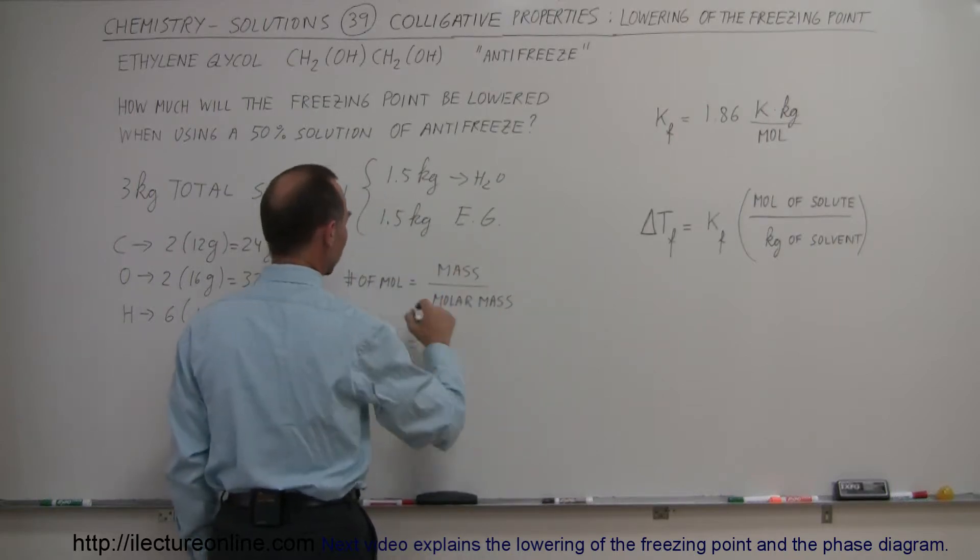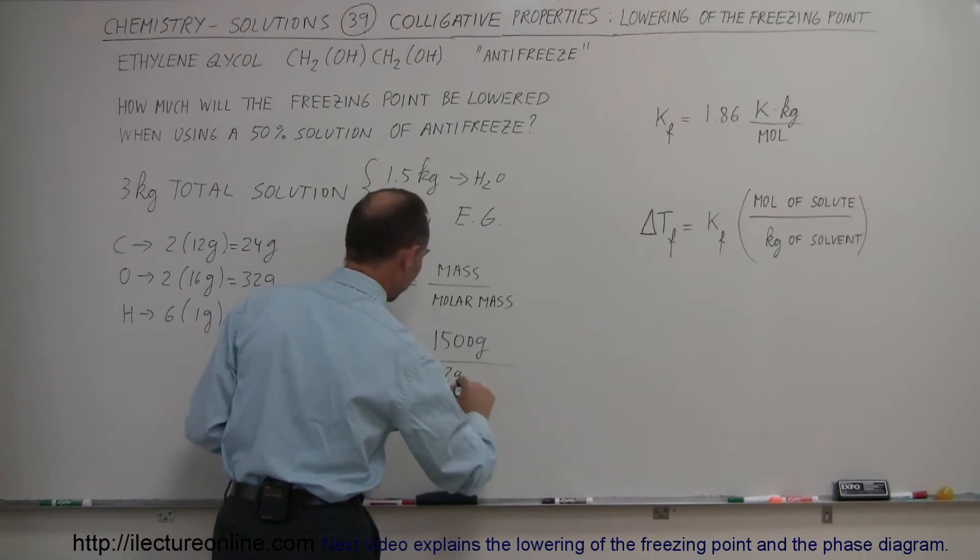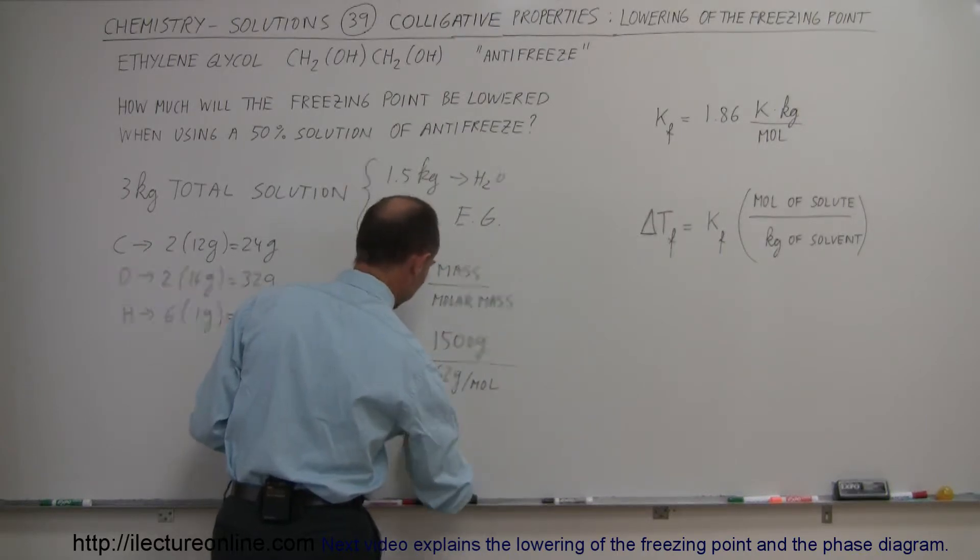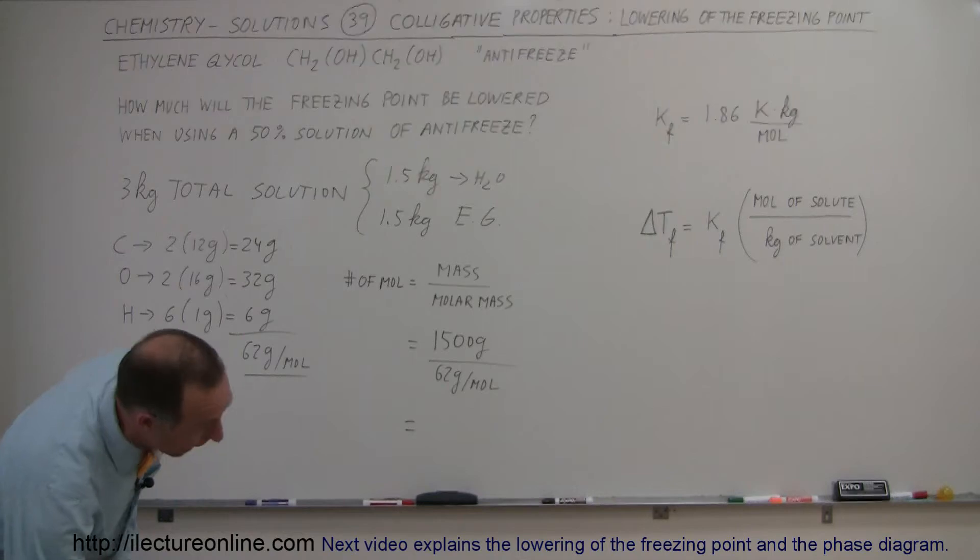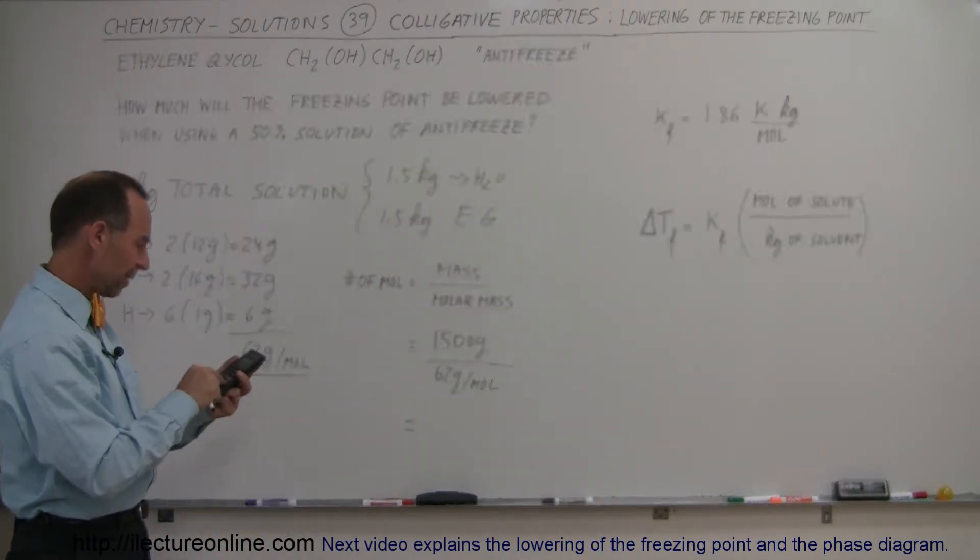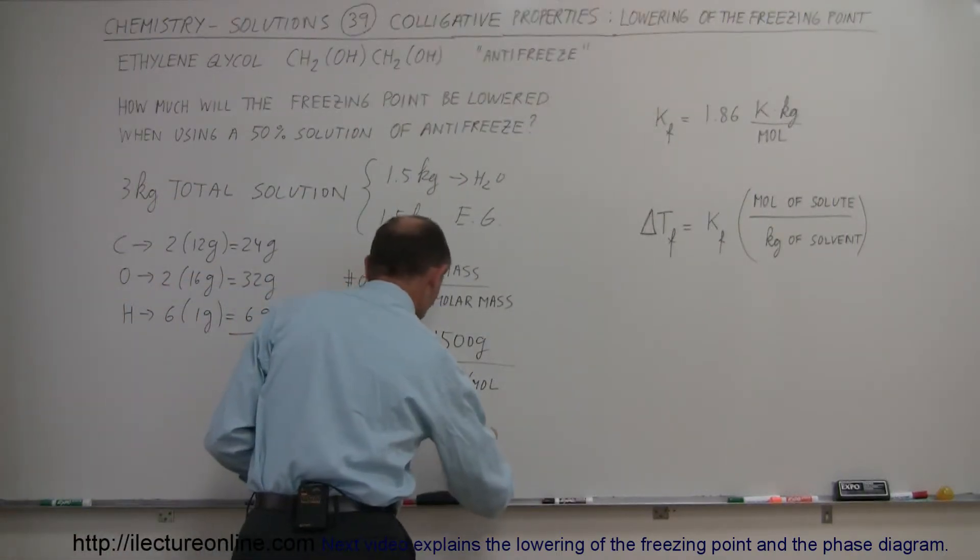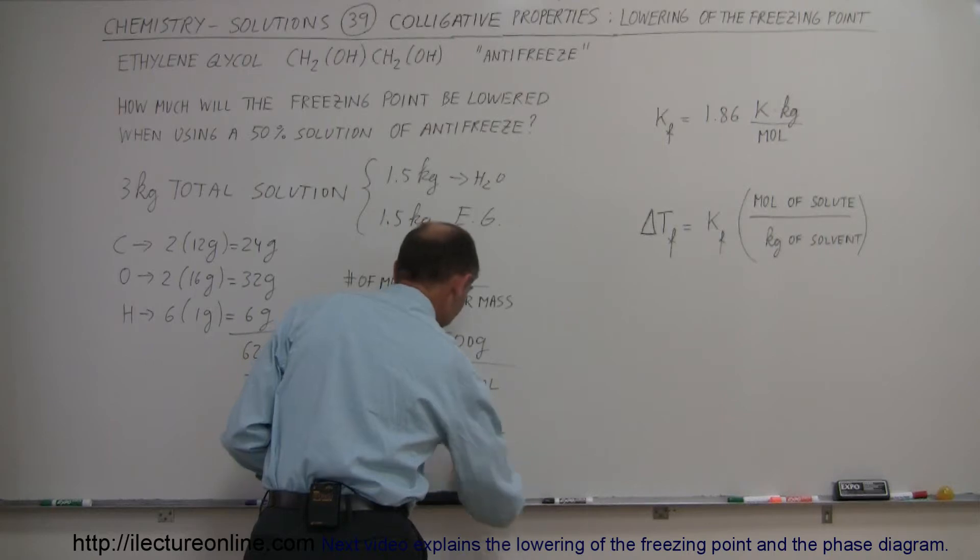The mass that we're adding is 1,500 grams, and the molar mass would be 62 grams per mole. That will give us the number of moles of ethylene glycol we're adding. So we have 1,500 divided by 62, that gives us 24.2 moles of ethylene glycol.